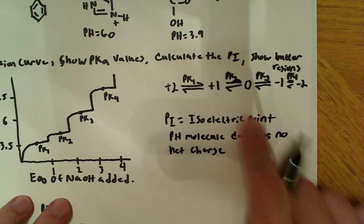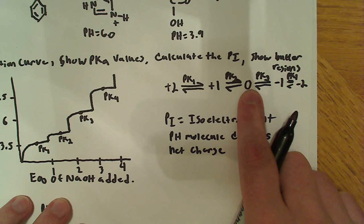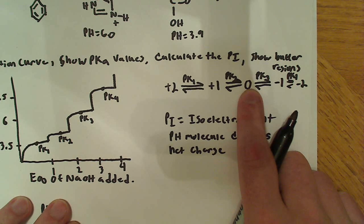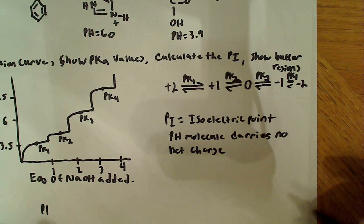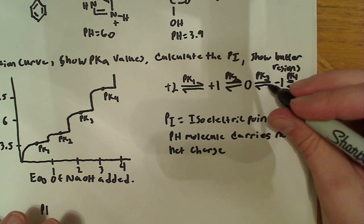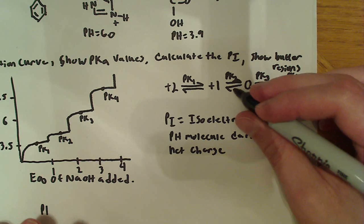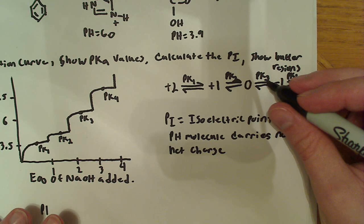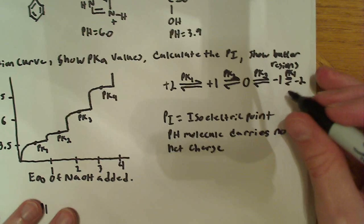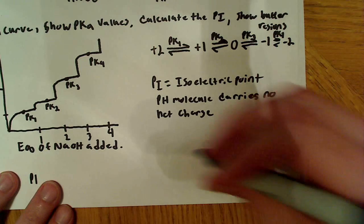And that's the point, it's the pH at which a molecule carries no net charge. So it's the pH where the molecule carries no net charge. So the charge is zero. Now that's exactly why I drew this up here. Because basically we're going to use these two pKa values up here, pK2 and pK3.